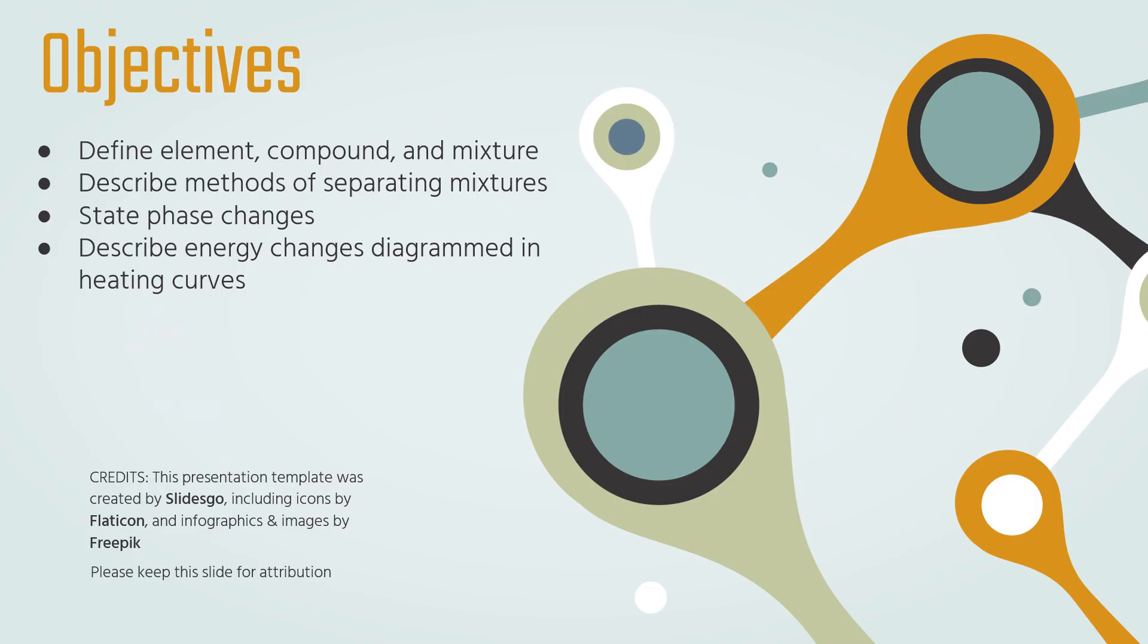And just like that, my friends, we have reached the end of our very first video lecture for the new IB chemistry syllabus. We defined element, compound, and mixture. We talked about how we can separate mixtures and depend on the properties of the components of the mixture. We talked about those phase changes, how we go from solid to liquid to gas and back, and sometimes we can skip from solid to gas or from gas to solid. We talked about the energy changes that are diagrammed in heating curves and how we can change kinetic energy and then potential energy and then kinetic energy again. Great work today.